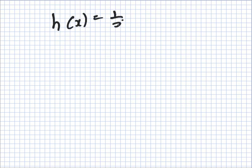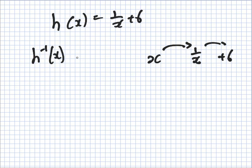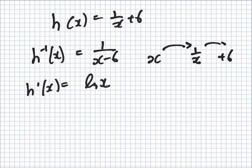H(x) equals 1 over x plus 6. What's H inverse? Well, let's do it the quick way. If I start off with x, what I do first is get the reciprocal, and then I add 6. So H inverse of x would be minus 6, and then get the reciprocal. So this should be the inverse function. By the way, the derivative function is log x. No, it's not. It's a dirty lie. It's minus 1 over x squared.